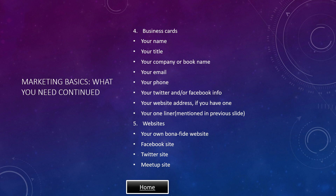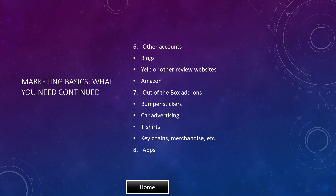Websites: your own bonafide website, a Facebook site, possibly a Twitter site or a meetup site, other accounts, blogs, Yelp or other review sites, and Amazon. Out of the box add-ons: bumper stickers, car advertising, T-shirts, key chains, merchandise, and etc.